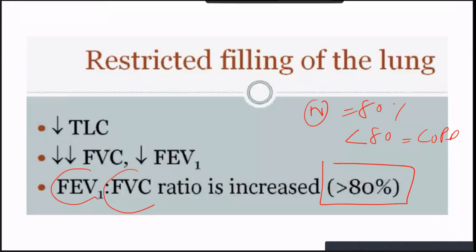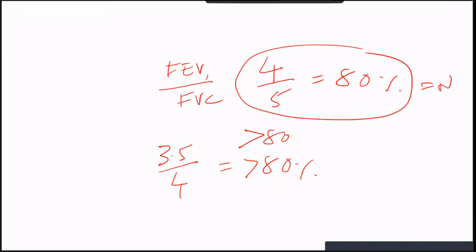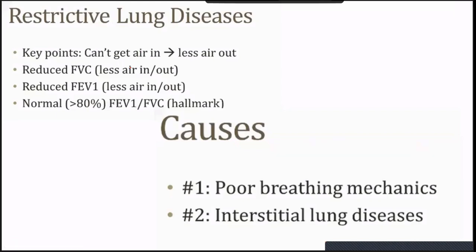What are the restrictive lung diseases? The main problem is you cannot get air in, so less air comes out — reduced FVC. Both FVC and FEV1 are reduced, but the hallmark of restrictive lung disease is an FEV1/FVC ratio of more than 80%. The causes include poor breathing mechanics — sometimes fibrosis, sometimes scoliosis, chest wall problems — and interstitial lung disease where the interstitial tissue of the lung becomes fibrotic.